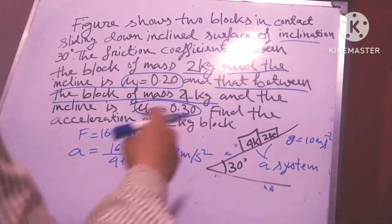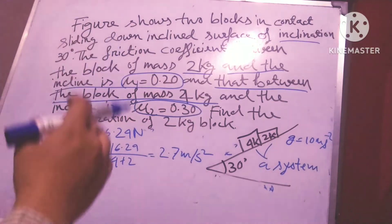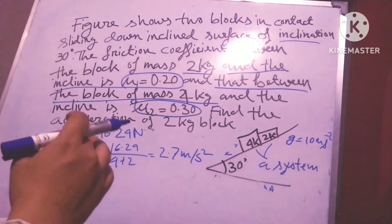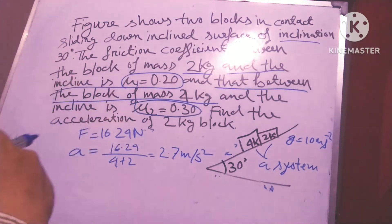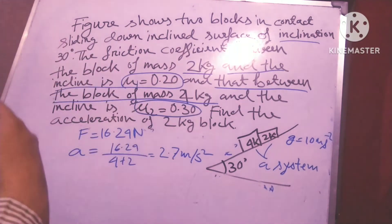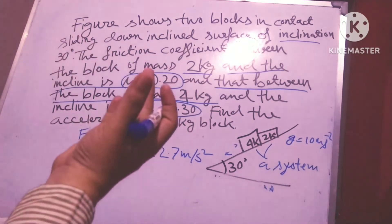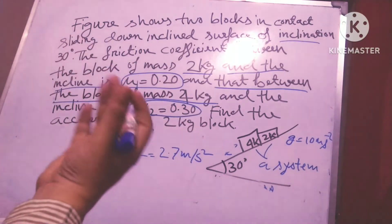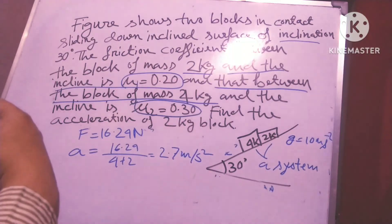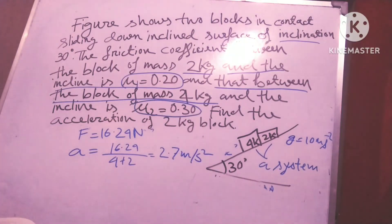This is the acceleration because both are in the system - they are not sliding down individually. They are considered as a system, so acceleration will be the same. Both 2 kg and 4 kg blocks are sliding with 2.7 m/s² acceleration. Thanks for watching.